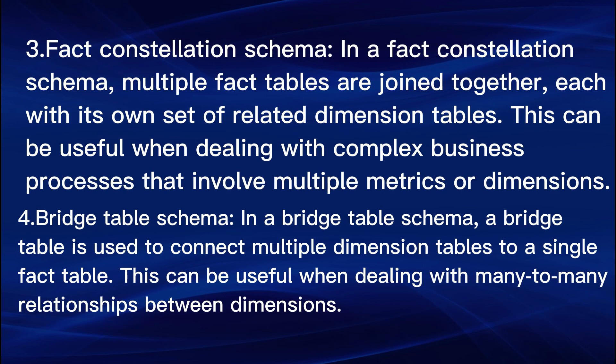3. Fact Constellation Schema — in a fact constellation schema, multiple fact tables are joined together, each with its own set of related dimension tables. This can be useful when dealing with complex business processes that involve multiple metrics or dimensions. 4. Bridge Table Schema — a bridge table is used to connect multiple dimension tables to a single fact table, useful when dealing with many-to-many relationships between dimensions.